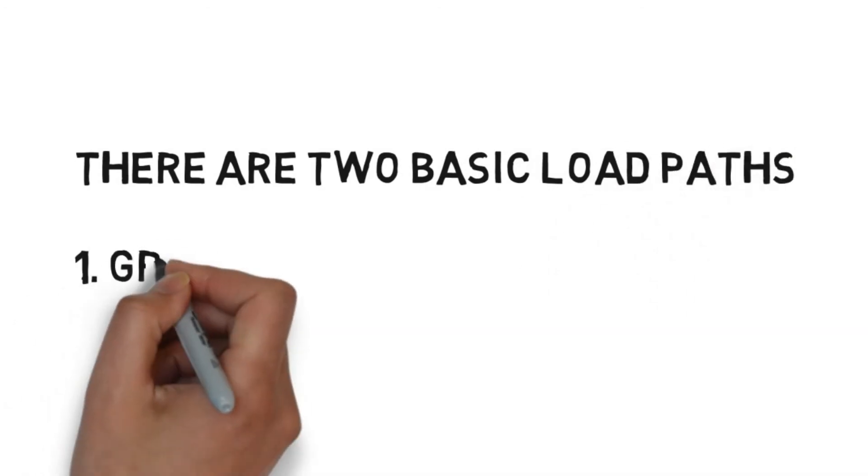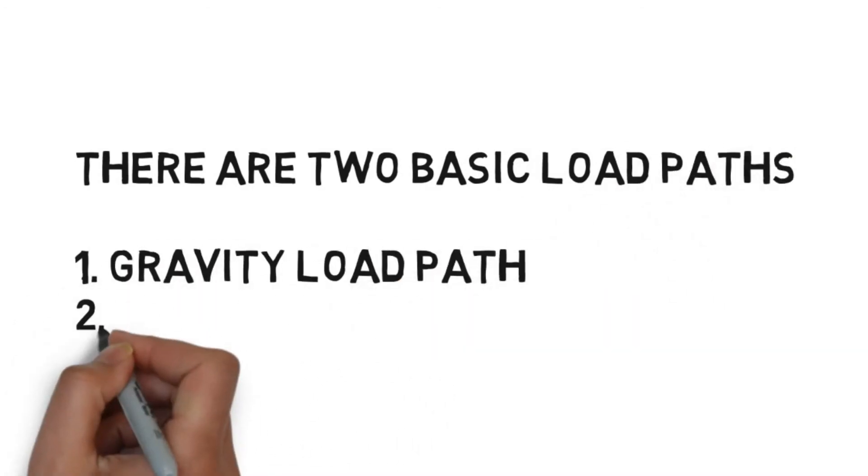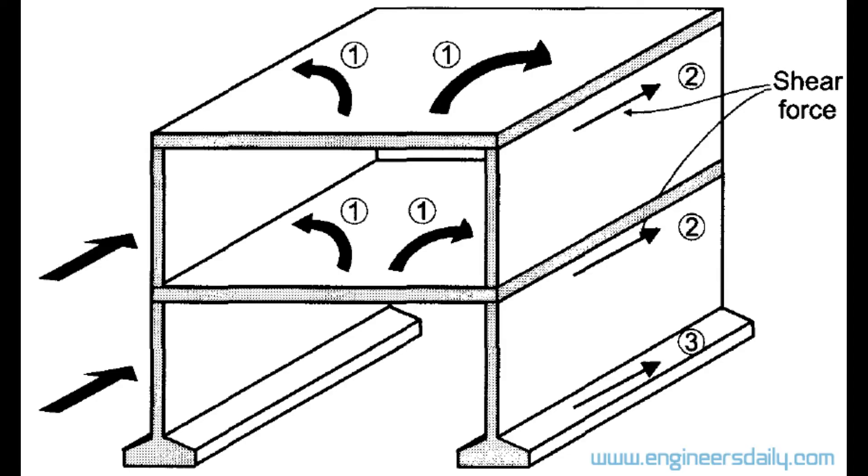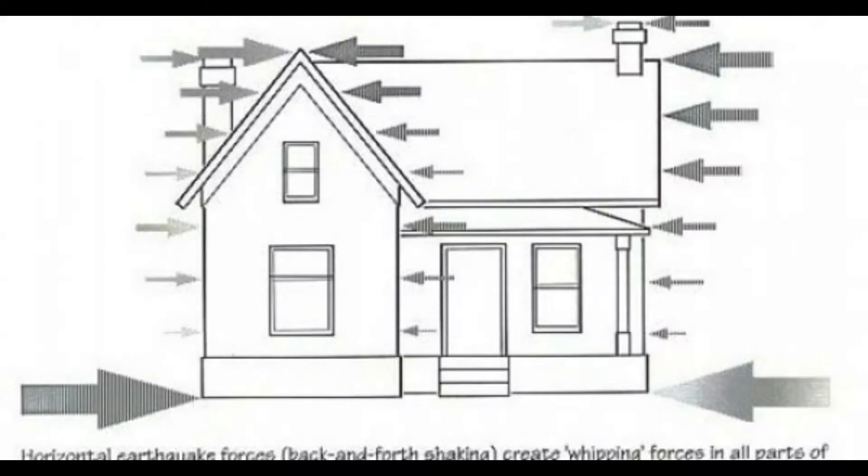The two load paths are gravity load path and lateral load path. Both the gravity and lateral load paths utilize a combination of horizontal and vertical structural components, as explained below.